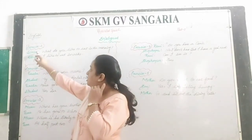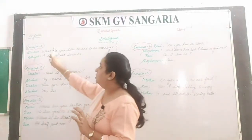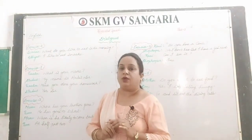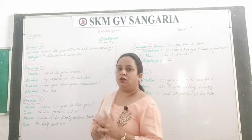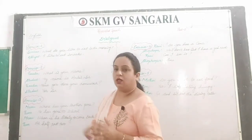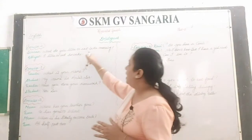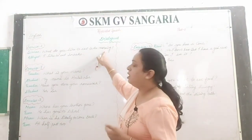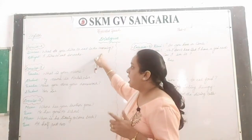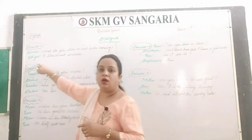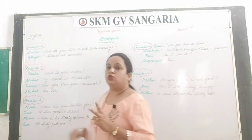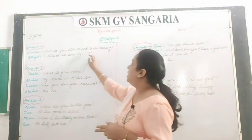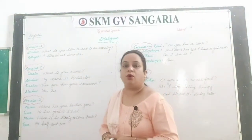You have to see the nature of the first dialogue — whether it is a question, a simple sentence, or a command. Here, 'what do you like to eat in the morning' is an interrogative sentence. So you have to write: Simran asked Abhijit what he liked to eat in the morning.